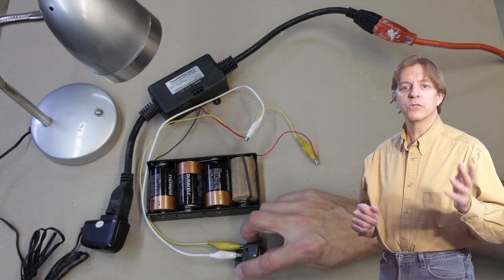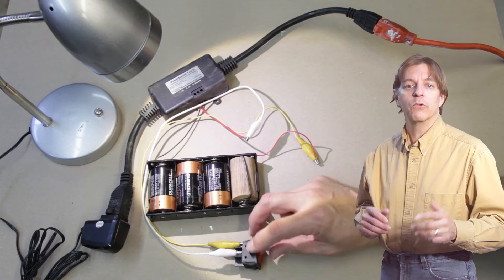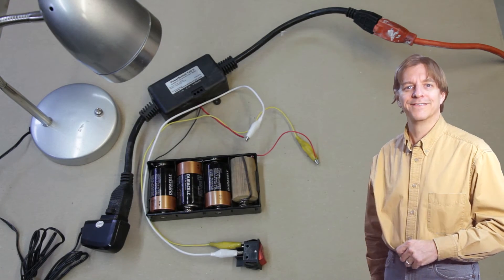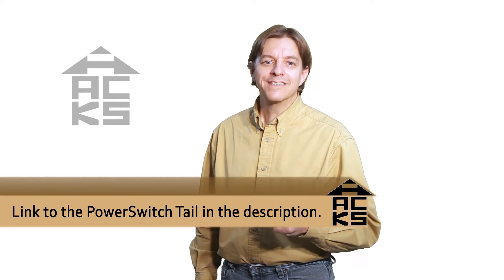Now when the switch is on, the device will be on, and when the switch is off, the device will be off. And that's the easiest way I know to remote control a vacuum or any device.